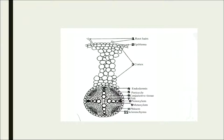Inside the endodermis is the pericycle layer. Inside the pericycle is conjunctive tissue and pith at the center. The main conduction of water happens through xylem and phloem. Xylem is responsible for movement of water; phloem is responsible for movement of food items and nutrients — starch or glucose synthesized in the green part of the plant — throughout the plant body down to the roots.